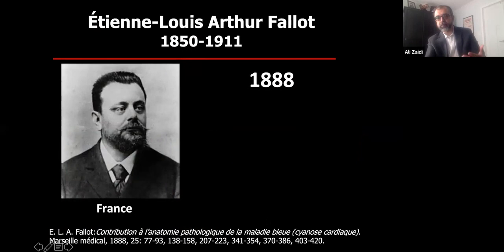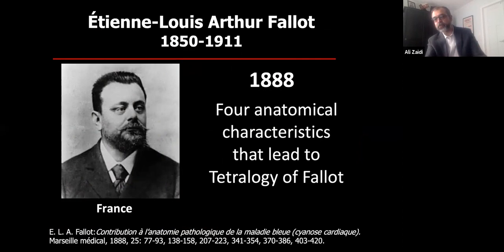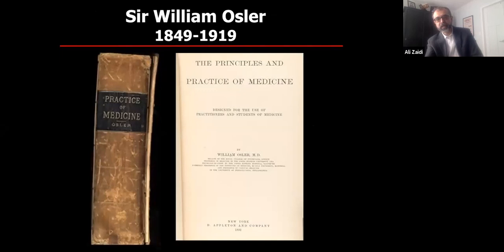Keep in mind there is no treatment at this point — this is all either autopsy or children who are dying. In 1888 in France, Arthur Fallot wrote about what he called tetralogy of Fallot, describing four anatomical characteristics. Stenson had written about this exactly 200 years earlier but no one gave it much credence. Fallot came along 200 years later and formally described and published what we now call tetralogy of Fallot.